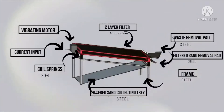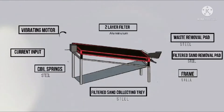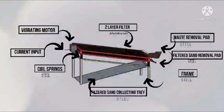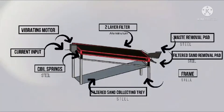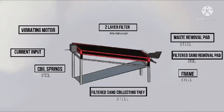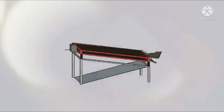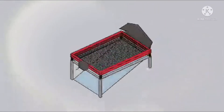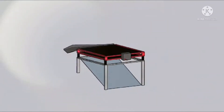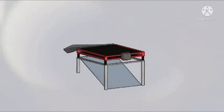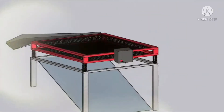Here you can see the concept we designed. The components of the design are named, and by observing this you can identify all the components used. The width of the machine is two feet six inches and the length is four feet. Now you can see the design up close.